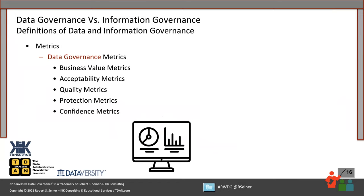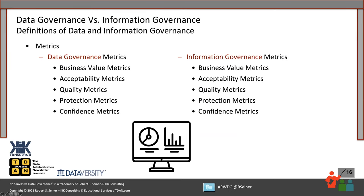The last component doing the side-by-side comparison is metrics. The processes and metrics are different between information governance and data governance in how they're defined, but you can use the same categories. With metrics, you can define business value metrics — what business value are we adding by governing our information assets? How well has information governance been accepted? What's the quality of the information? How are we protecting it? What level of confidence do we have in it? Most organizations are looking for business value metrics, acceptability metrics, quality, protection, and confidence metrics.